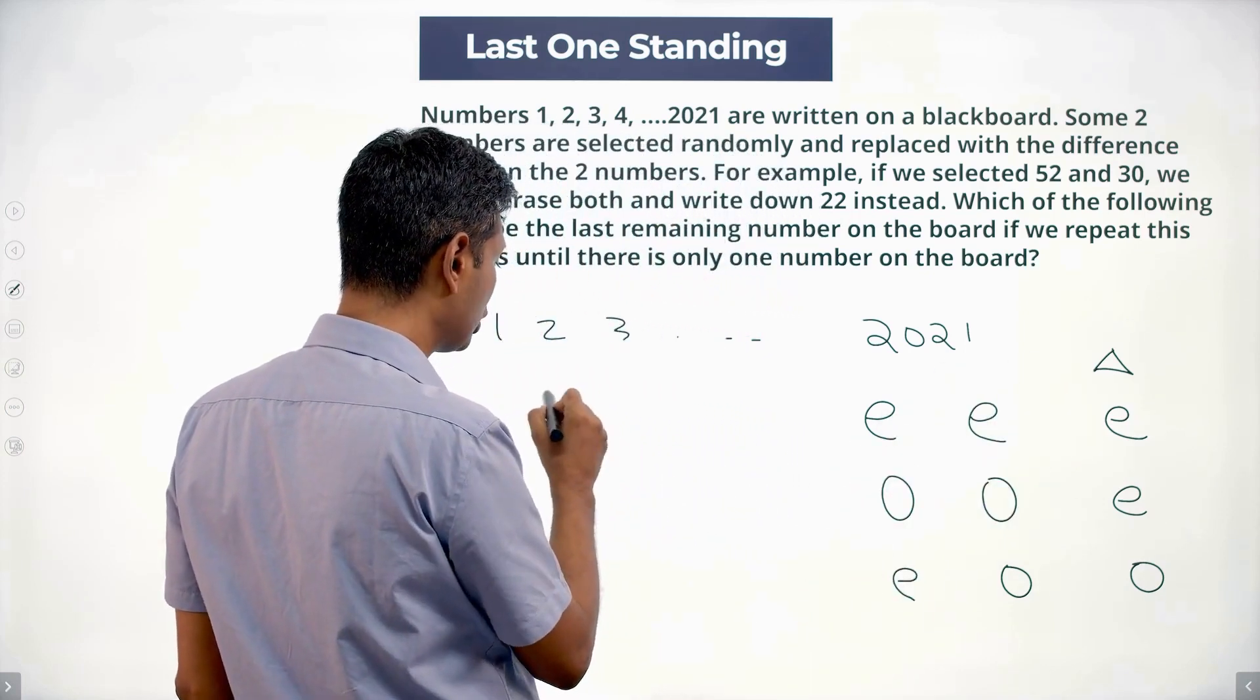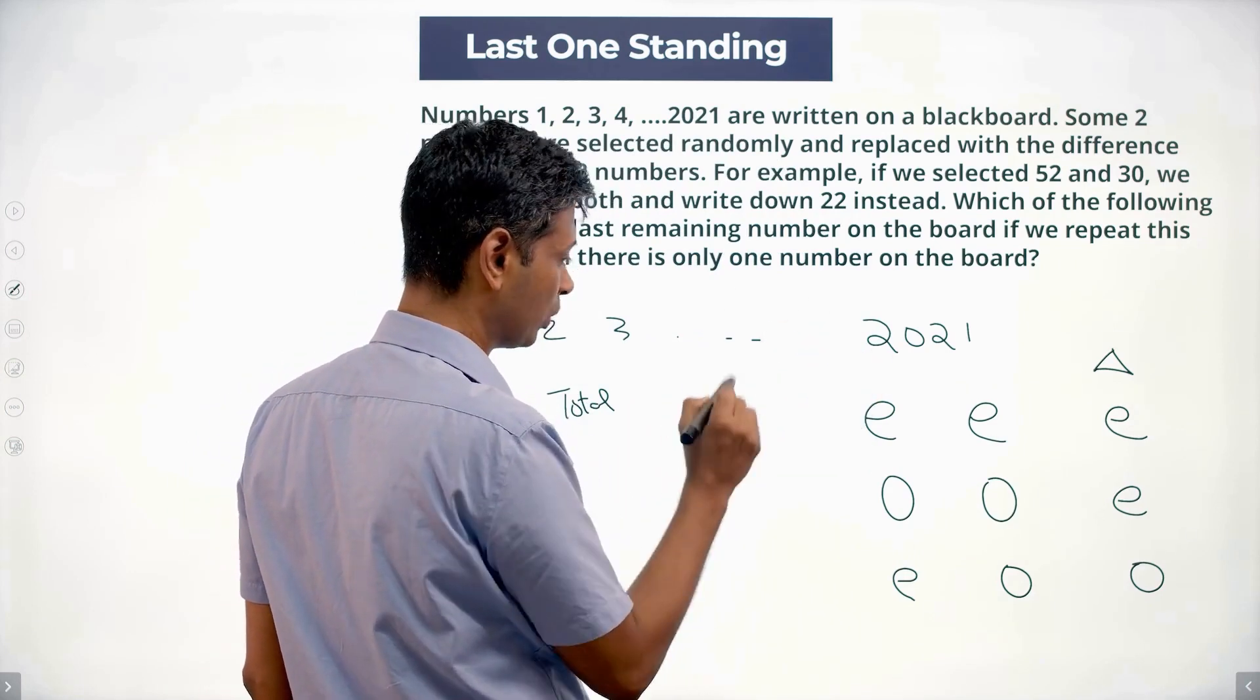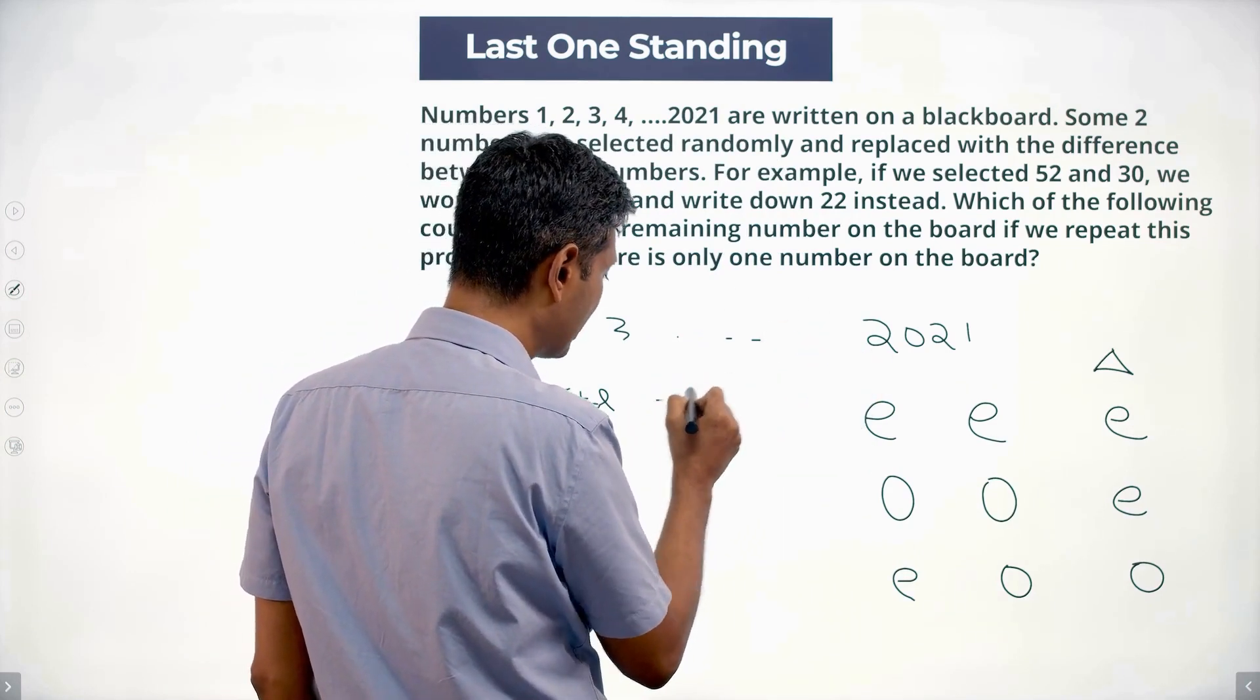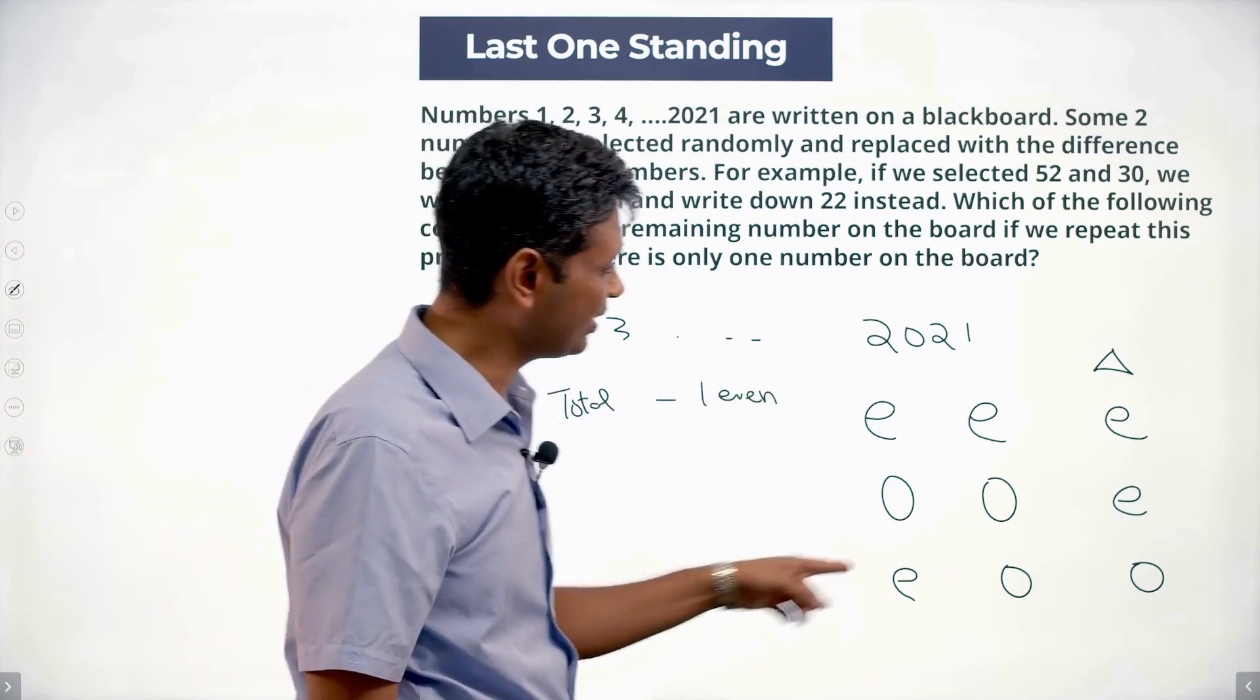Here I take out two even numbers and replace it with an even number. Or, whatever total numbers I have, when I do this process once, I'll subtract minus one even number. Or if this happens,